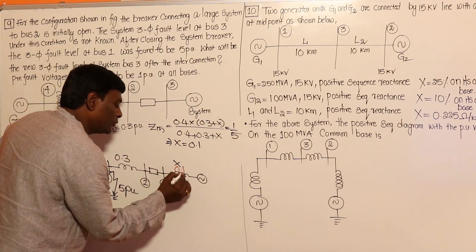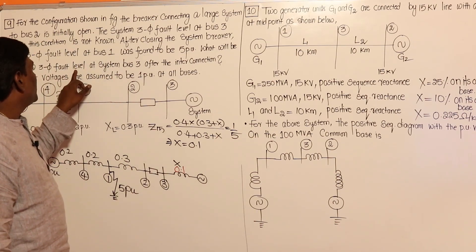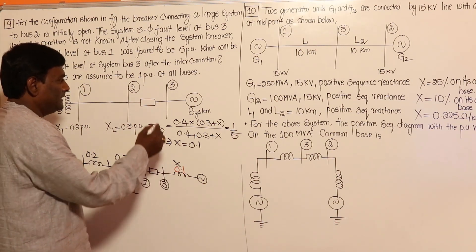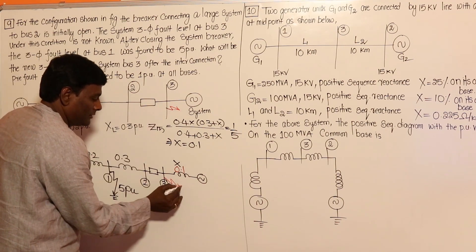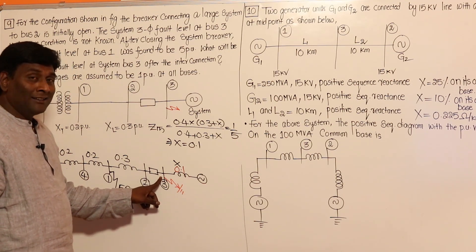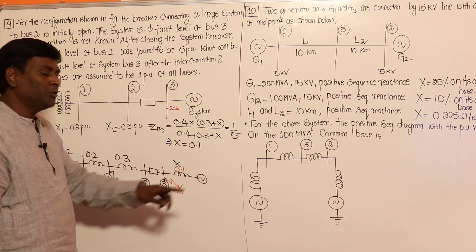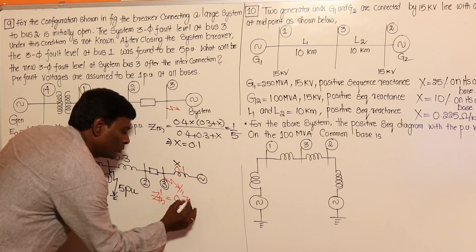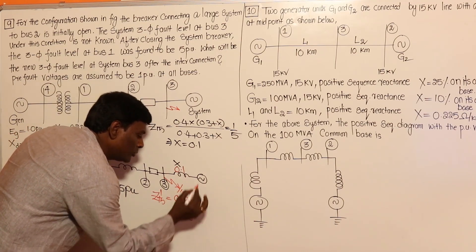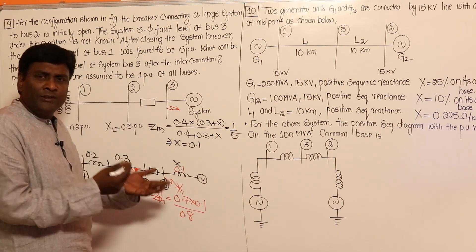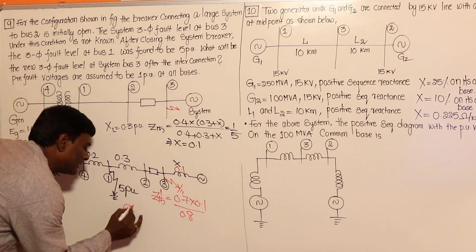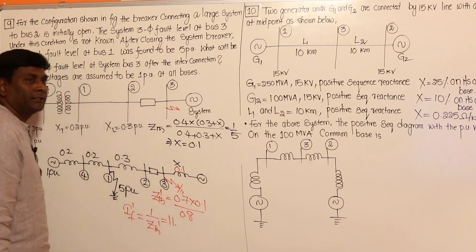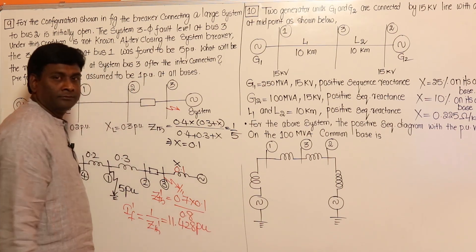With X = 0.1 per unit, for the new fault at Bus 3, the Thevenin impedance is the parallel combination of 0.7 (which is 0.3 + 0.2 + 0.2) and 0.1: Z-Thevenin' = 0.7 × 0.1 / (0.7 + 0.1) = 0.07 / 0.8 = 0.0875 per unit. The new fault current level at Bus 3 is 1 / Z-Thevenin' = approximately 11.43 per unit.